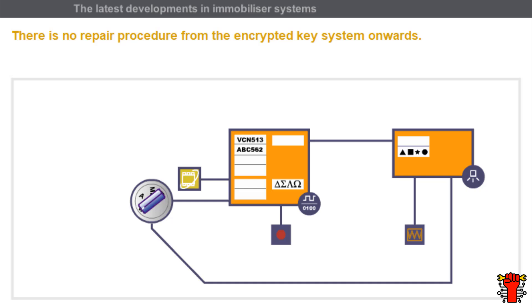There is no repair procedure from the encrypted key system onwards. A repair code is attributed to the vehicle for life when it is manufactured. This repair code is used to allocate spare parts which are supplied uncoded to the system, such as the decoder,